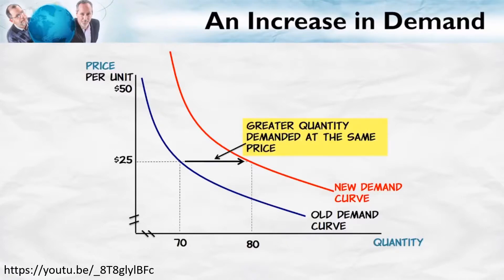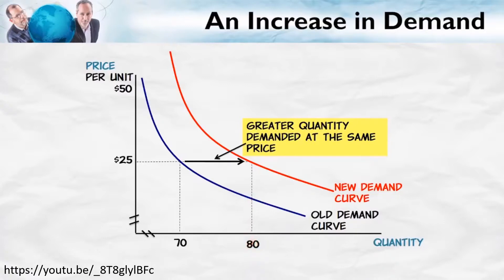An increase in demand means there's a greater quantity demanded at every price. For example, on the old demand curve at a price of $25, people were willing and able to purchase 70 units. On the new demand curve, at that same price of $25, people are now willing and able to purchase 80 units. An increase in demand is a greater quantity demanded at the same price.